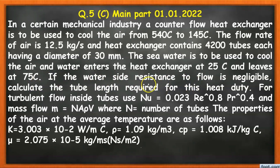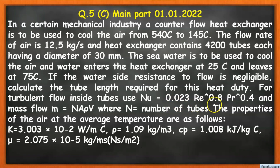The water leaves the heat exchanger at 75°C. The water side resistance to flow is negligible. We need to calculate the tube length required for this heat duty. For turbulent flow inside the tube, the Nusselt number correlation is Nu = 0.023 × Re^0.8 × Pr^0.4. The mass flow rate is given by ṁ = N × A × ρ × V, where N is the number of tubes.